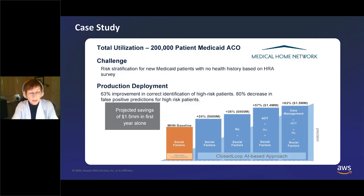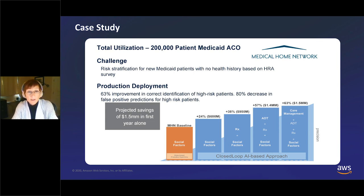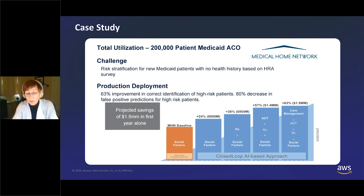Let's look at a few examples of how these have been used. The first is Medical Home Network — the nation's largest Medicaid ACO, located in Chicago. Their challenge was risk stratification for new Medicaid patients where they didn't have a health history. In 2014, they created a proprietary HRA because they knew that for their population — struggling with social determinants of health — none of the traditional HRAs would work.